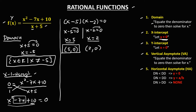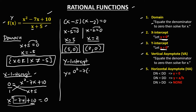Therefore, the coordinates of the x-intercept are (5, 0) and (2, 0). For the y-intercept, we let x equal 0. From this given, y equals 0 squared minus 7 times 0 plus 10, over 0 plus 5. So we have y equals 10 over 5, so y equals positive 2.